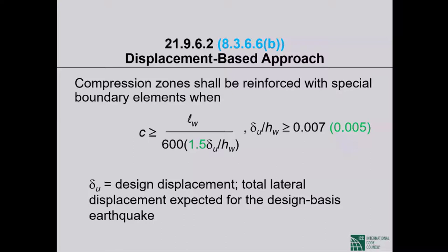To figure out which portions develop significant compression, compute the neutral axis depth C. If C is greater than or equal to a critical neutral axis depth given by the right-hand side of the expression in the code, then part of your cross-section is under significant compression and must be specially confined. If the calculated neutral axis depth is less than the critical neutral axis depth, no specially confined boundary elements are required.